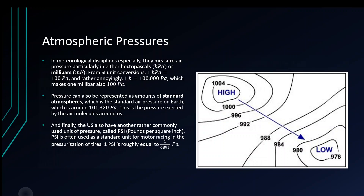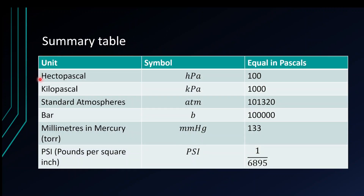So that's a lot, but here's a summary. Hectopascal (hPa) = 100 pascals. Kilopascal (kPa) = 1,000 pascals. Standard atmosphere (ATM) = 101,320 pascals. Bar or millibar (B) = 100,000 pascals. Millimetres of mercury or Torr (mmHg) = 133 pascals. And pounds per square inch (PSI) = 1/6,895th of a pascal. We're going to do one quick example on converting between them.